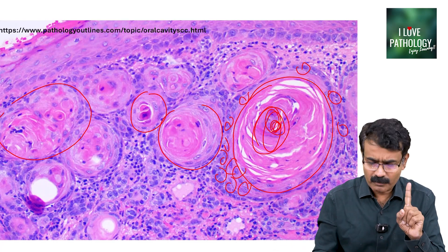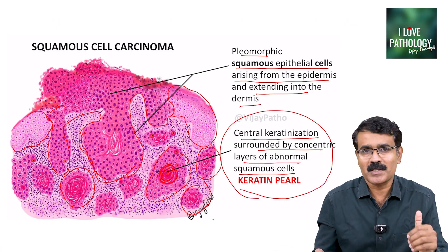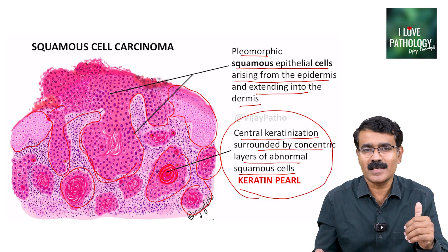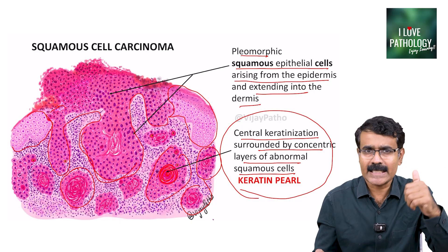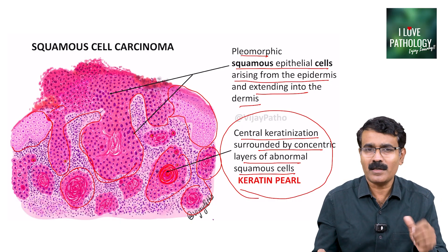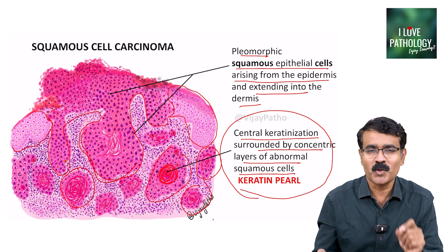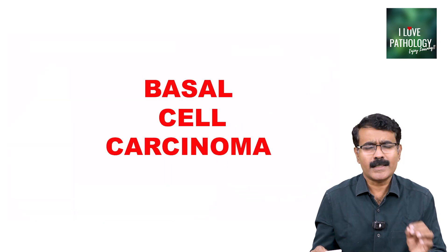Remember two points about squamous cell carcinoma. First, pleomorphic squamous epithelial cells arising from the epidermis extending into the dermis. Second, presence of numerous keratin pearls. That's it.